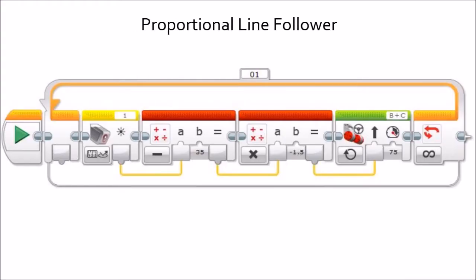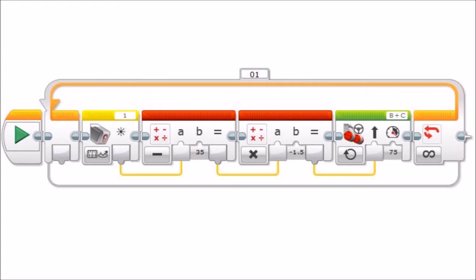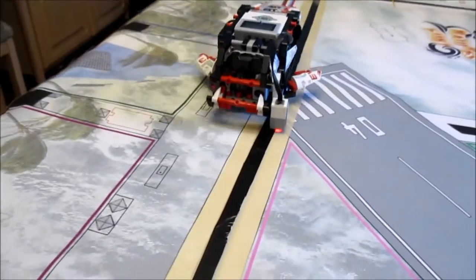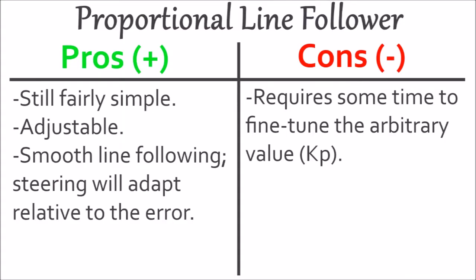Our third type is the proportional line follower. A proportional line follower uses one color sensor and a target value, measuring how far off the target value it is to steer itself back onto the line. The error is proportional to the correction it makes, hence the name. One advantage is that it's still fairly simple — it only needs four programming blocks inside a loop. The line follower is also very adjustable and produces very smooth line following. If you have a complex line with different types of turns, the correction adapts based on the error. The downside is that it requires some time to fine-tune the arbitrary value that scales how sharp or smooth your corrections are, but this really shouldn't take too long in practice.